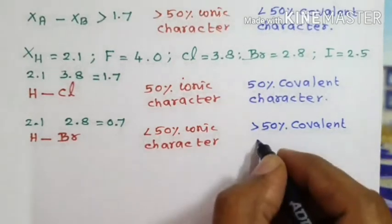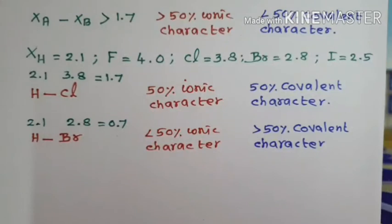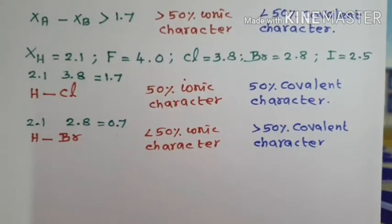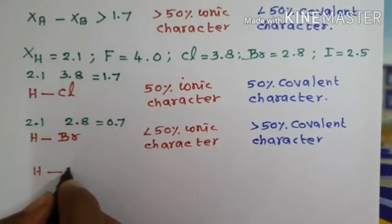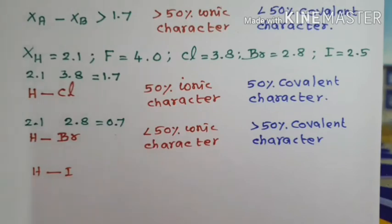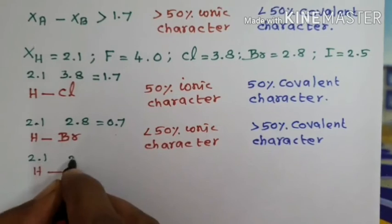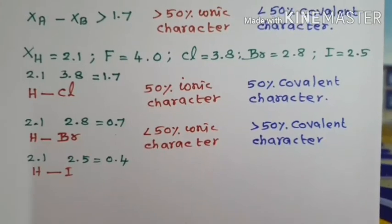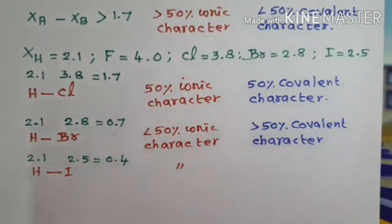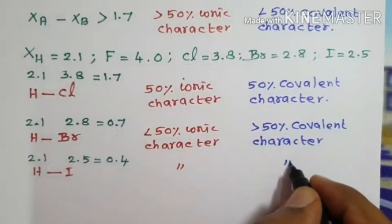Another example under this condition is hydrogen iodide, HI. Hydrogen electronegativity is 2.1 and iodine is 2.5; their difference is 0.4. Therefore, HI also has less than 50% ionic character and greater than 50% covalent character.